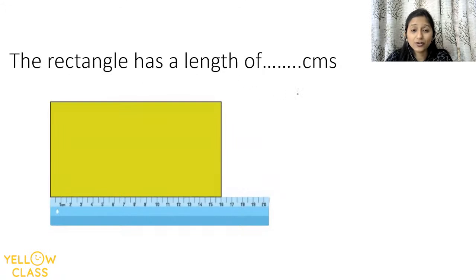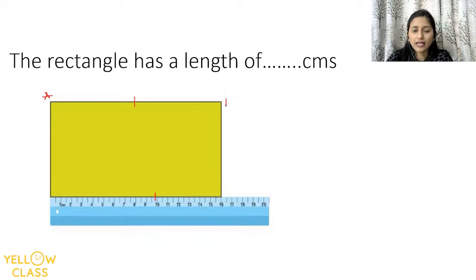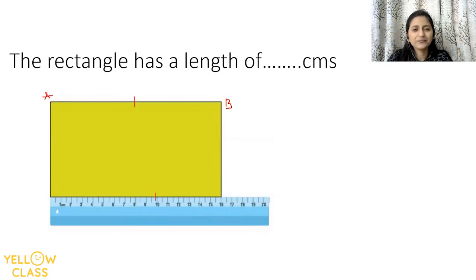This rectangle has a length of 16 centimeters. What will be the length of side AB — the opposite side? Do you know the properties of a rectangle? The length is also 16 cm, because the opposite sides of a rectangle are equal — two long sides and two short sides.